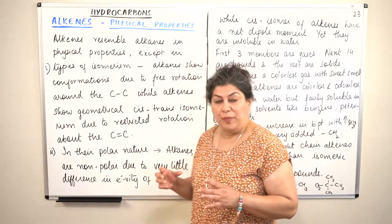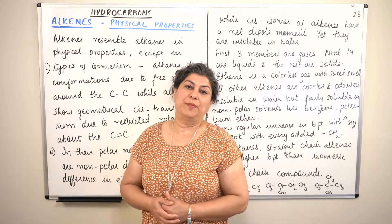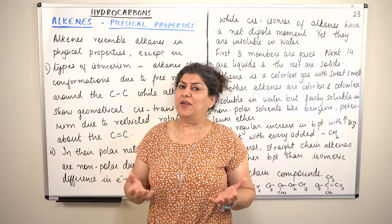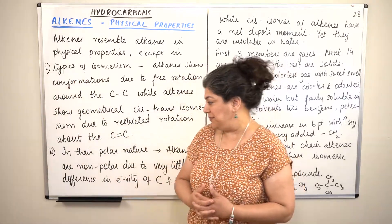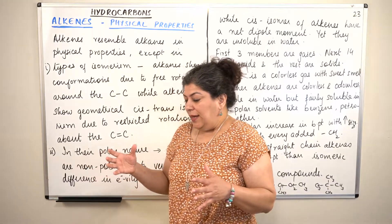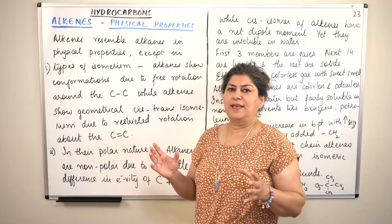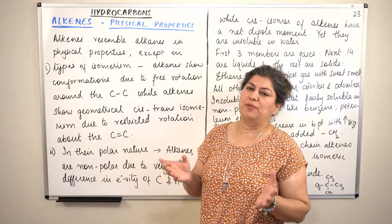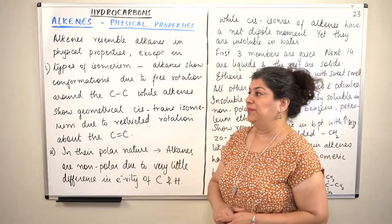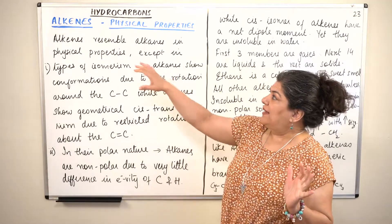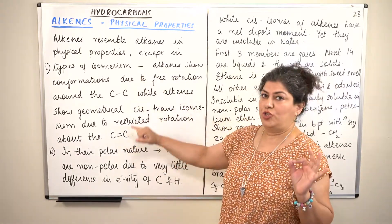In physical properties, alkenes resemble alkanes a lot, and we have already studied about alkanes. I would encourage you to watch those videos of this chapter where I did the physical properties of alkanes. If you compare the physical properties of alkanes and alkenes, we find that most of the physical properties of alkenes are similar to those of alkanes, barring just two of them.